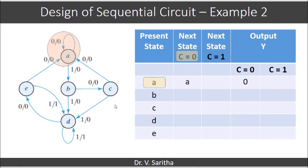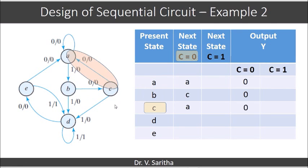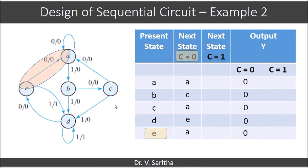Complete the state table like this: A on 0 is A, output is 0. B on 0 is C, output is 0. C on 0 is A, output is 0. D on 0 is E, output is 0. E on 0 is A, output is 0.